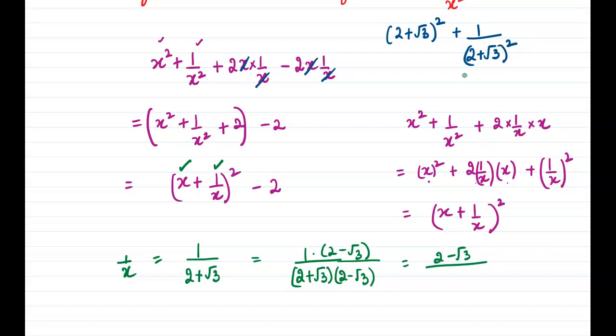So we will get (2 - √3) over—now this is (a - b)(a + b), so a², that is 2² minus (√3)². So this will be equal to (2 - √3) divided by (4 - 3), which will be equal to 1.